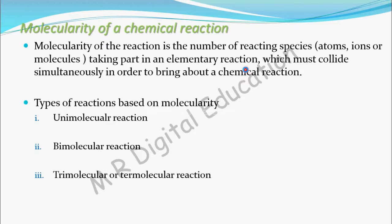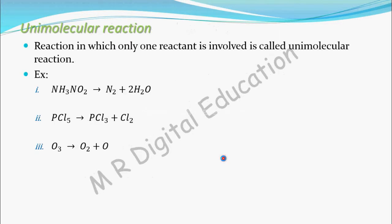Based on molecularity, reactions are classified as: unimolecular, bimolecular, and trimolecular or termolecular reactions. A reaction in which only one reactant is involved is called a unimolecular reaction. For example: NH4NO2 gives N2 plus 2H2O; PCl5 gives PCl3 plus Cl2; and O3 gives O2 plus O. In all these reactions, only one reactant species — only one molecule — is involved, so they are called unimolecular reactions.